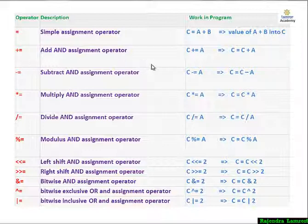Add assignment operator: first add the value and then assign. C plus A equal to A means C equal to C plus A. First we add the value of C then assign of C. Minus operator also doing with the same thing. Minus of C minus A.